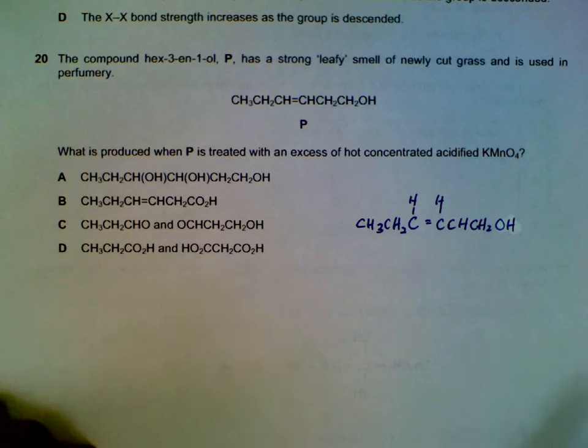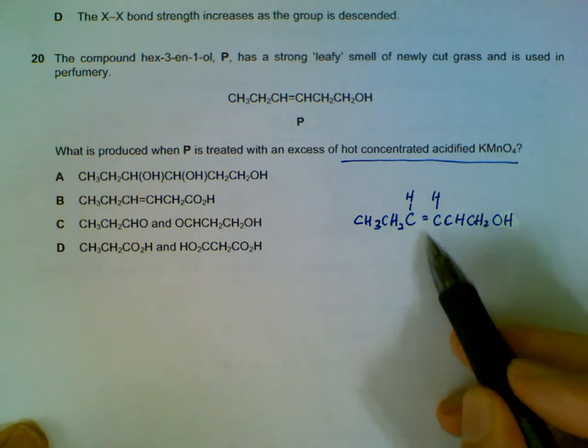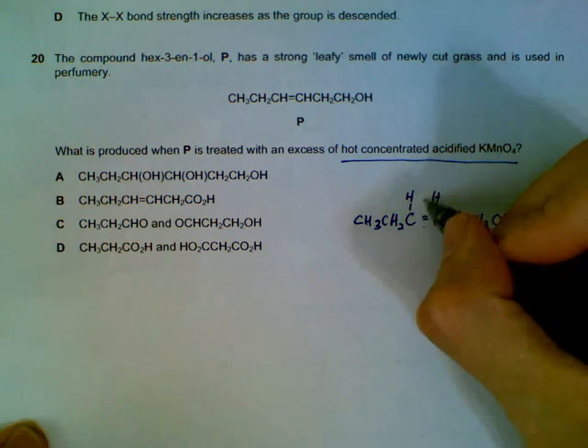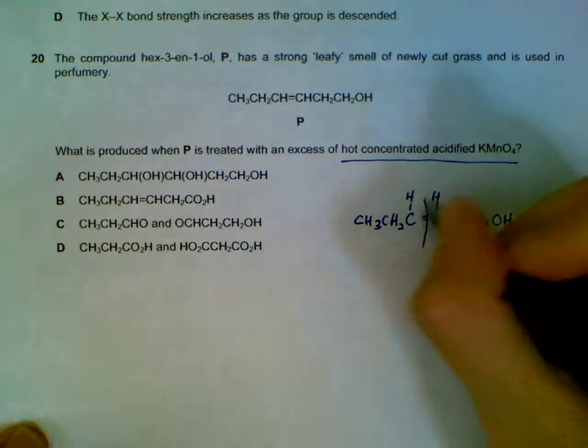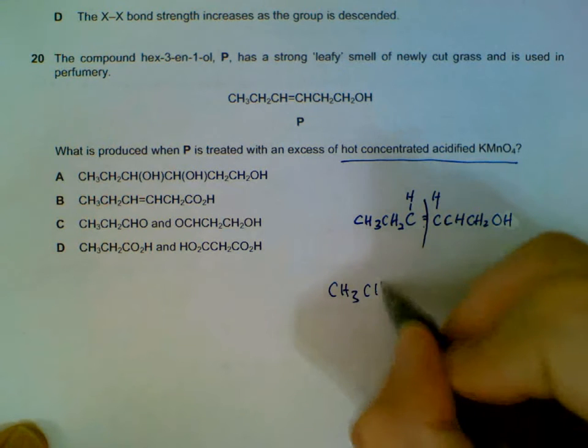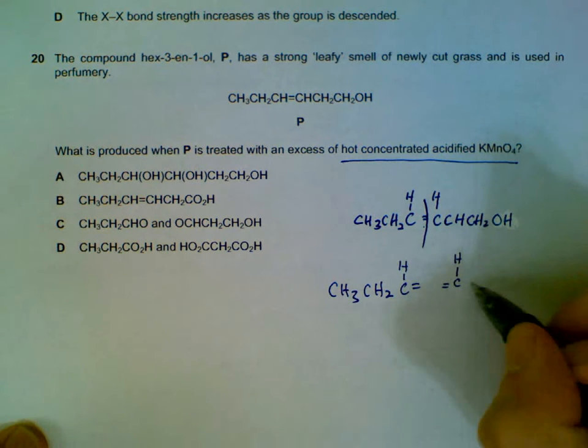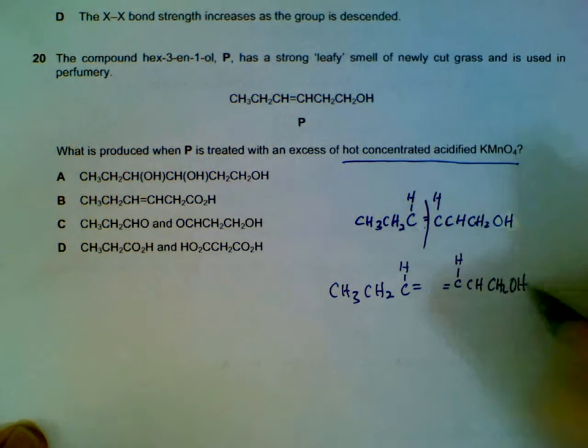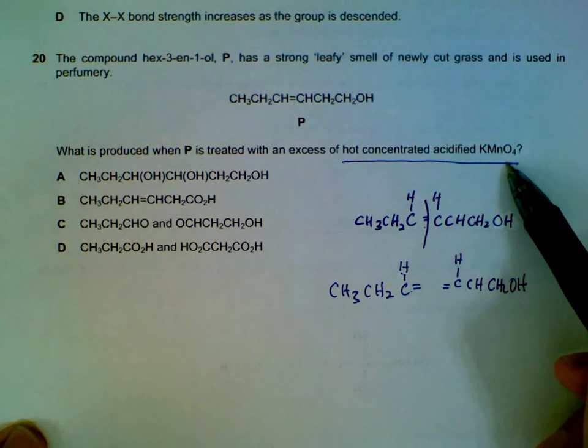What happens when P is treated with excess hot concentrated permanganate? So what happens when we have KMnO4 that's hot - if there is a double bond, what will happen is the double bond will be broken. This is what we call oxidative cleaving. So if we break this double bond, we will have something like an incomplete structure. Double bond broken.